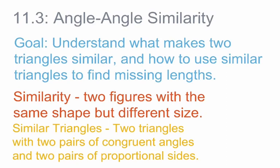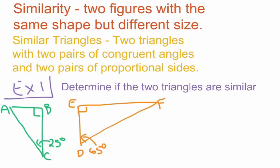To do that, we're going to be looking at the measures of their angles. For our first example, the directions tell us simply to determine if the two triangles are similar or not. In order to do this, we need to show that there are two pairs of congruent angles in these triangles. Congruent just means the same measure, so if two angles have the same measurement, they're congruent. If we can show two pairs of congruent angles, then we can say the triangles are similar.